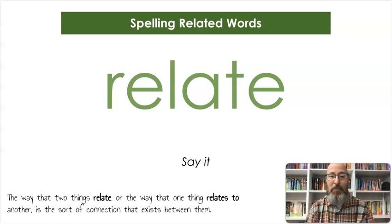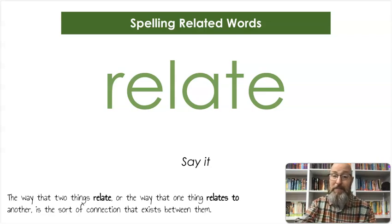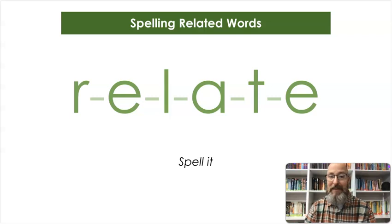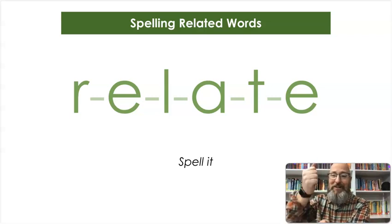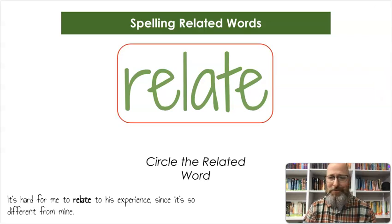Our next word is relate. The way that two things relate, or the way that one thing relates to another, is a sort of connection that exists between them. Let's count the syllables — re-late, relate. Let's spell it: R-E-L-A-T-E, relate. And let's write it: R-E-L-A-T-E. And we'll circle that entire word again. It's hard for me to relate to his experience, since it's so different from mine.